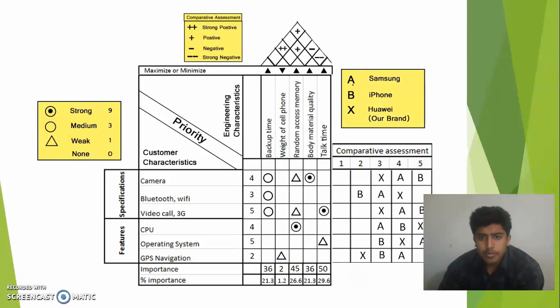So let me bring up the keys. For example, there are only two competitors: Samsung and Huawei. And the third one is our own brand. So I have denoted Samsung with A, iPhone with B, and our own brand with X.